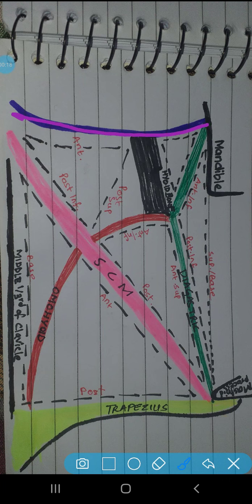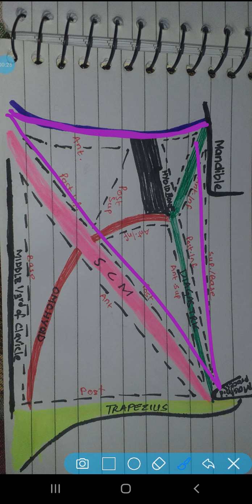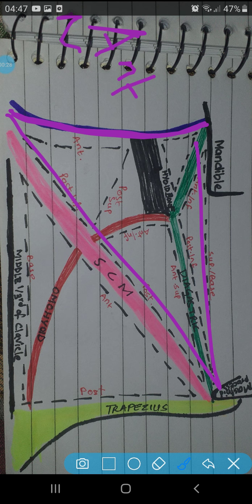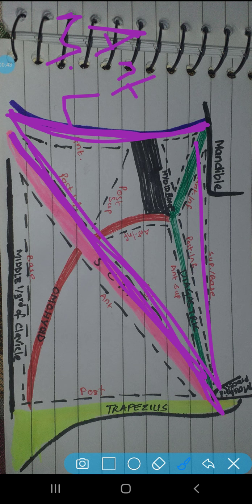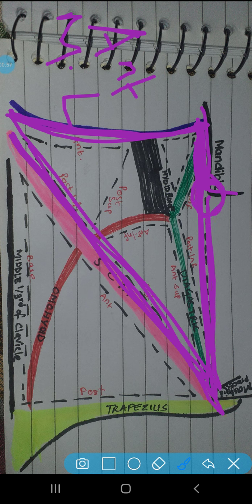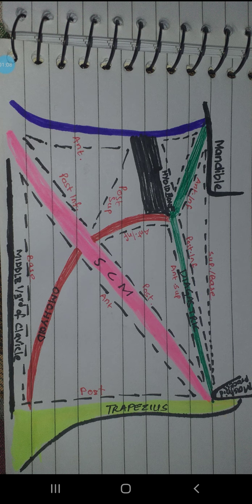This is the anterior triangle medial boundary. This is the lateral border of your anterior triangle - this is the sternocleidomastoid. You can see this is the mandible, the base of the mandible, and the mandibular process. This is the superior border of the anterior triangle.